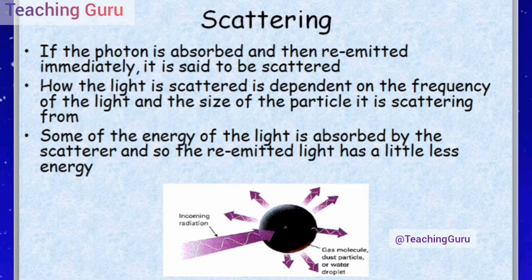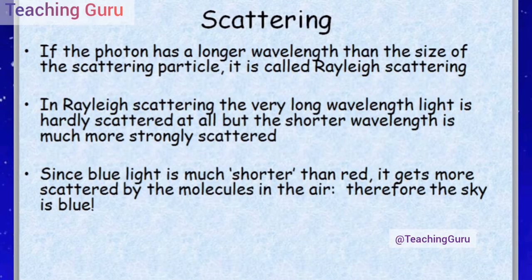Now, scattering. If the photon is absorbed and then re-emitted immediately, it is said to be scattered. What is scattered depends on the frequency of light and the size of the particle it is scattering from. Some energy is absorbed by the scatterer, so the re-emitted light has a little less energy. If the photon has a longer wavelength than the size of the scattering particle, this is called Rayleigh scattering.